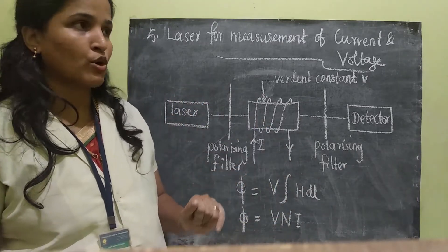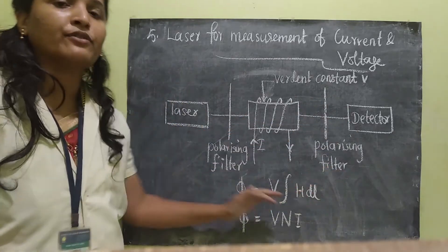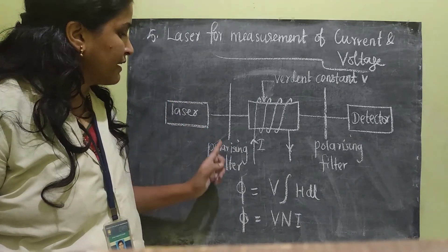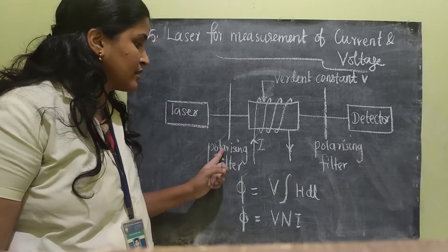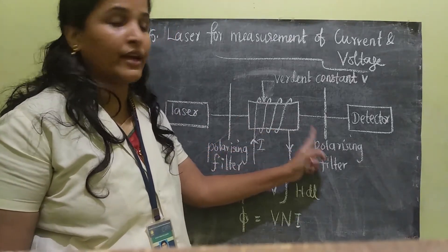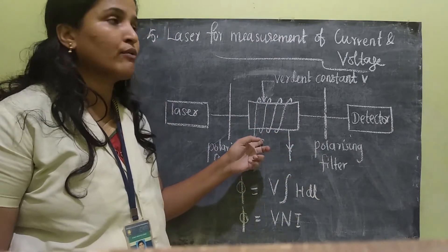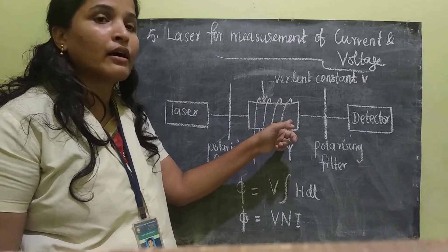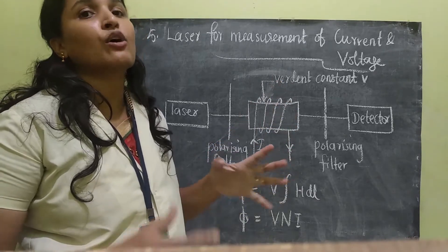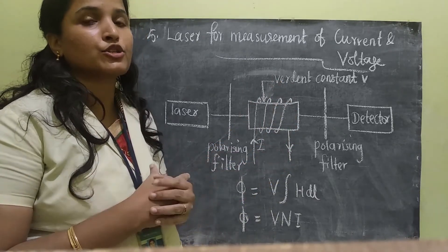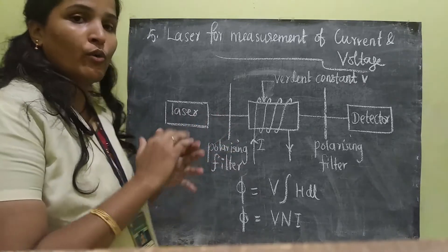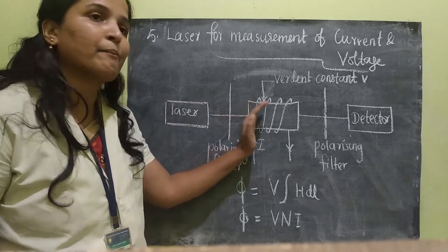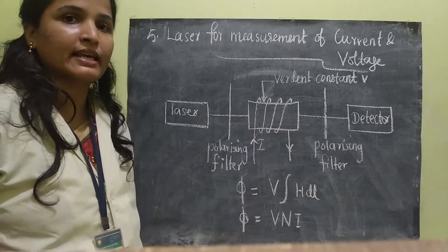Let's see the construction of this arrangement for measurement of current and voltage. It has a laser device, and here we have two polarizing filters — this is the first one and this is the second one. In between the polarizing filters, we have a magnetic field created by a high Verdet constant material. The Verdet constant of this material should be very high.